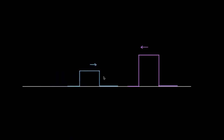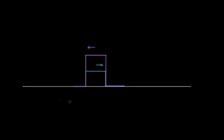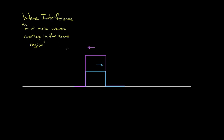If I take one wave and move it here, and then another wave moves over the top of that one, I'm gonna get wave interference. This is the term — wave interference — for when two or more waves overlap in the same region. The string can't be in two places at once; there can only be one string and one shape of that string. The way you find out what the total wave is gonna look like is simply by adding up the contributions of the two waves that are overlapping.